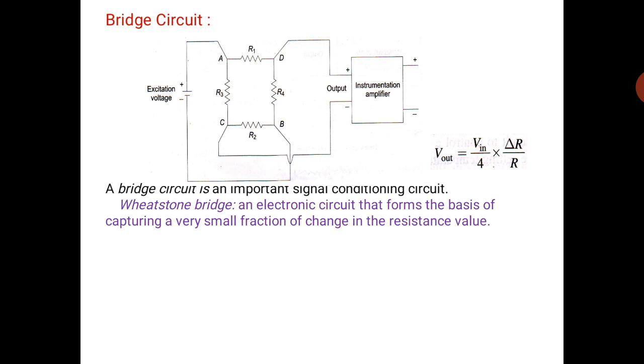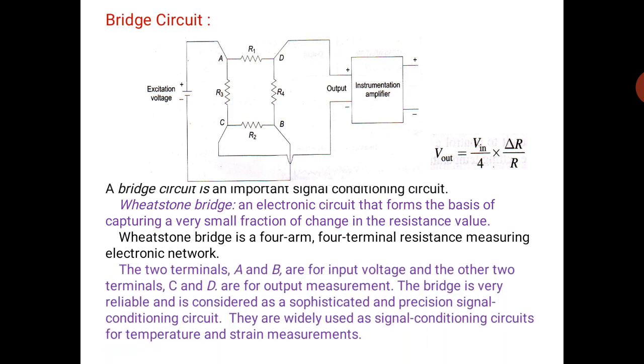Wheatstone bridge: an electronic circuit that forms the basis of capturing a very small fraction of change in resistance value. Wheatstone bridge is a four-arm, four-terminal resistance measuring electronic network. The two terminals AB are for input voltage and terminals CD are for output measurement.